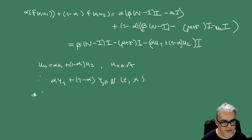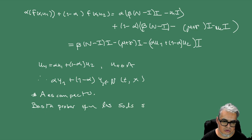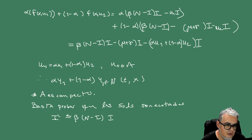Es más o menos fácil convencerse de que A es compacto. Y entonces basta probar que las soluciones son acotadas. Entonces lo que tenemos es esta cota para I': beta por N menos I por I.